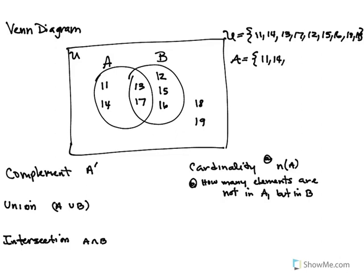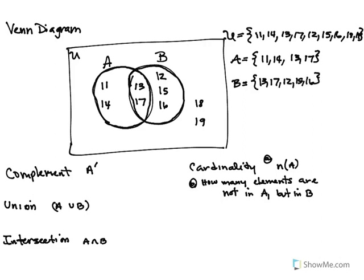Set A is this circle here, so everything that is in the A circle is part of the A set. Then we have set B, which corresponds to the B circle. The Venn diagram is a visualization of the set so you can see it. We put everything into roster form, and we have two elements — 18 and 19 — which are not part of set A nor set B.